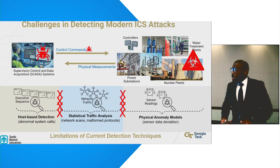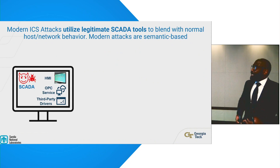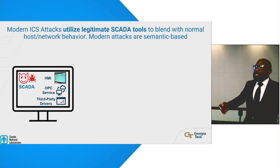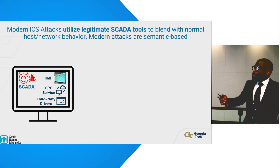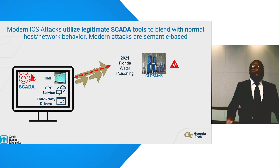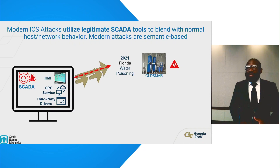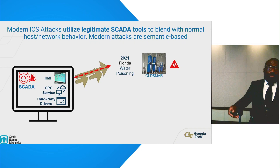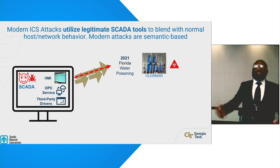Modern attacks make use of legitimate SCADA tools in the SCADA environment to appear normal. For example, in 2021 we had the attack in Florida, the city of Oldsmar, where the attacker came into the SCADA network, compromised the human-machine interface — a legitimate SCADA tool used by operators — and from there was able to alter the process parameters to poison the water supply.